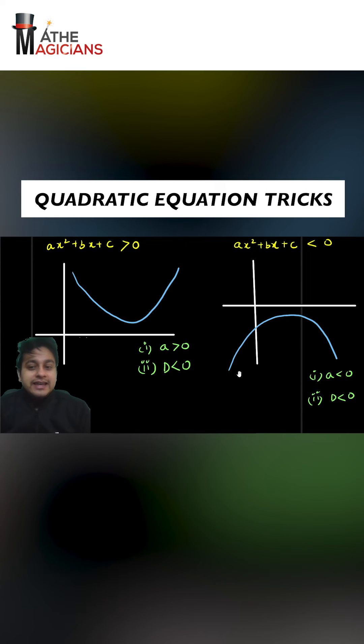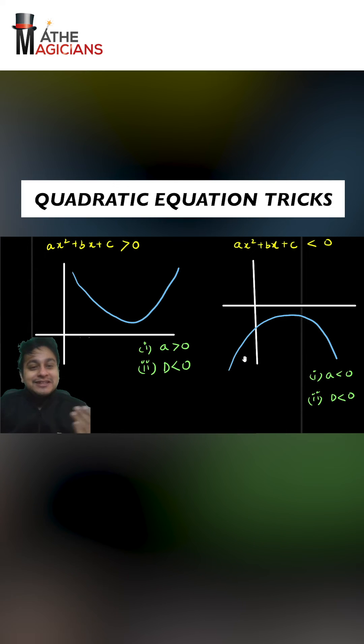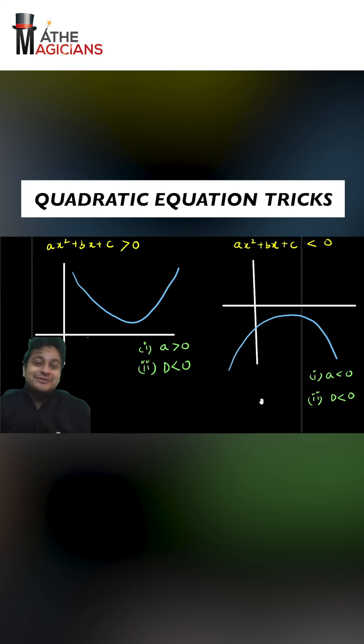Moreover, it will never cut the x axis. Therefore, again, we can say it will have unreal roots and same as the before one, it will also have discriminant less than zero.